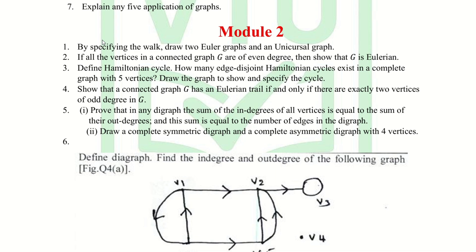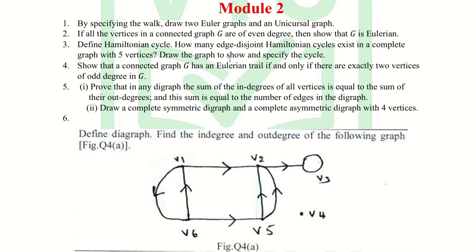Moving to the next module — the first question is: by specifying the walk, define an Euler graph. The second question is: if all the vertices in a connected graph G are of even degree, then show that G is Eulerian.